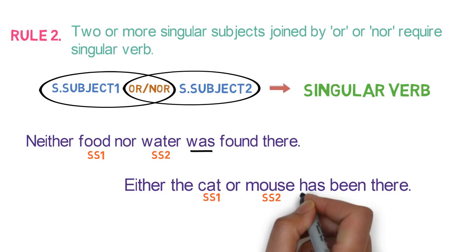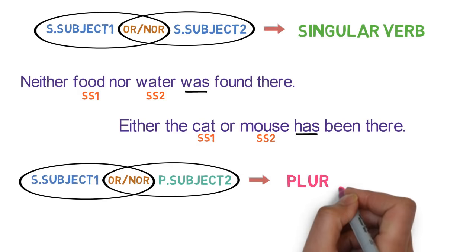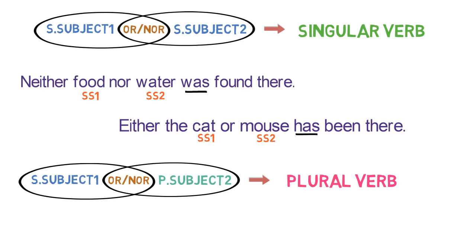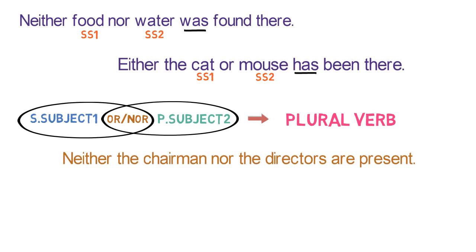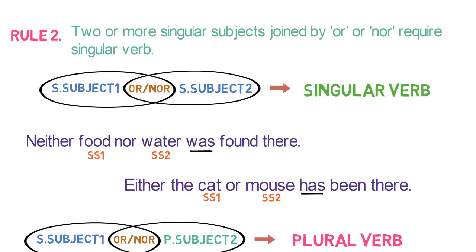Let's look into a different scenario for Rule 2. If one subject joined by OR or NOR is plural, the verb is plural, and the plural subject must be placed nearest to the verb. For example, 'Neither the chairman nor the directors are present.' Here chairman is singular but directors is plural, so we use plural verb ARE. Please also note that the plural subject directors is placed just before the verb ARE. So this is Rule 2.